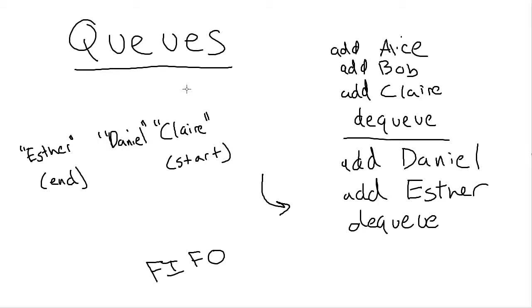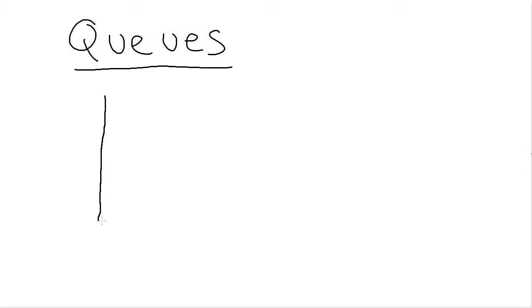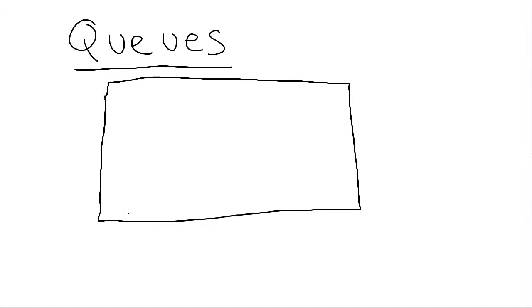Next, let's talk about the applications of queues. One of the biggest is saving data in a temporary space — also called a buffer. The place you've most likely seen the word 'buffering' is when watching videos or listening to music. I'll use YouTube as an example.